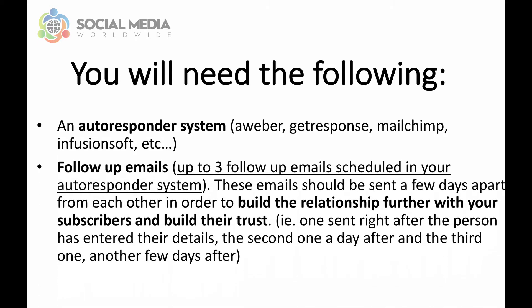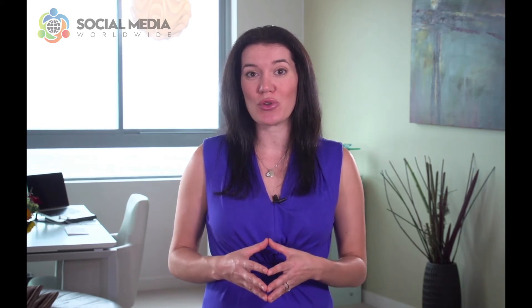Number six, follow-up emails — up to three follow-up emails scheduled in your autoresponder system. These emails should be sent a few days apart from each other in order to build the relationship further with your subscribers and build their trust. For example, one sent right after the person has entered their details, the second one a day after, and the third one another few days after. The purpose of these emails is to build excitement about your business, add value to your subscribers so they're more likely to buy when you make offers, and train them to open your emails and look forward to them.